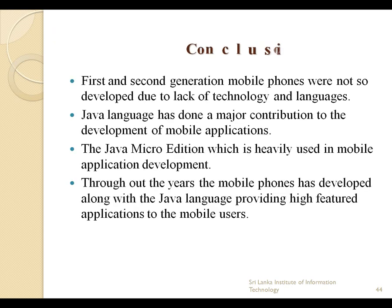Throughout this presentation we have focused on mobile phone technologies and their evolution with programming languages like Java. First and second generation mobile phones were not well developed due to lack of technology and languages. Java language has made a major contribution to the development of mobile applications. The Java 2 Micro Edition, i.e. J2ME, is heavily used in mobile application development. I hope that by listening to this presentation you have gained knowledge about the development of mobile technology based on Java language.